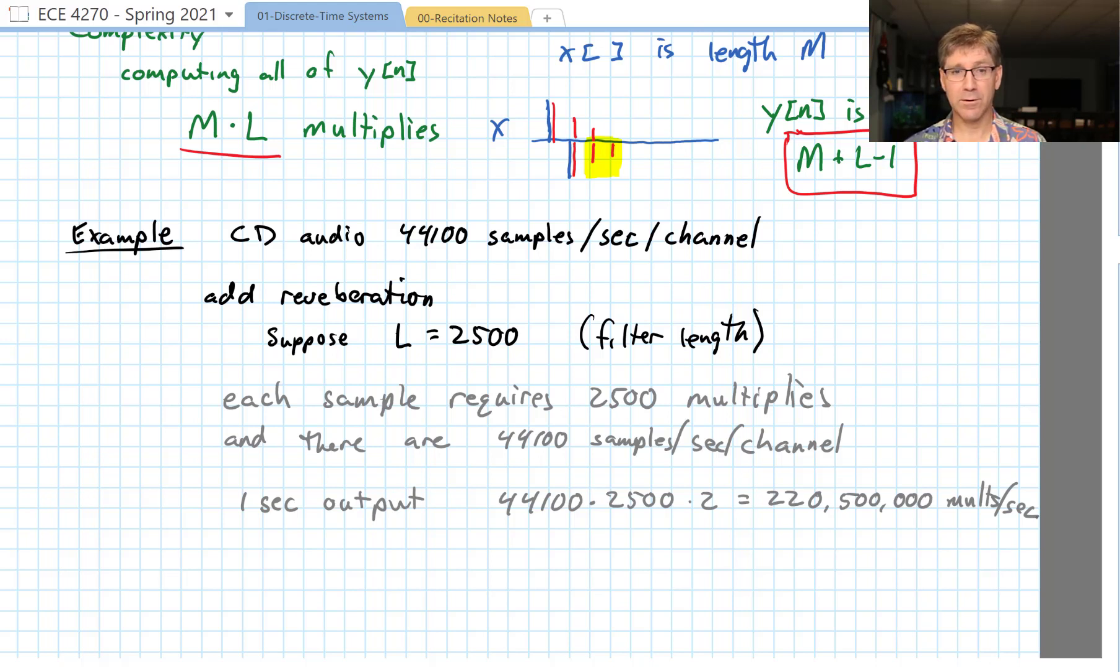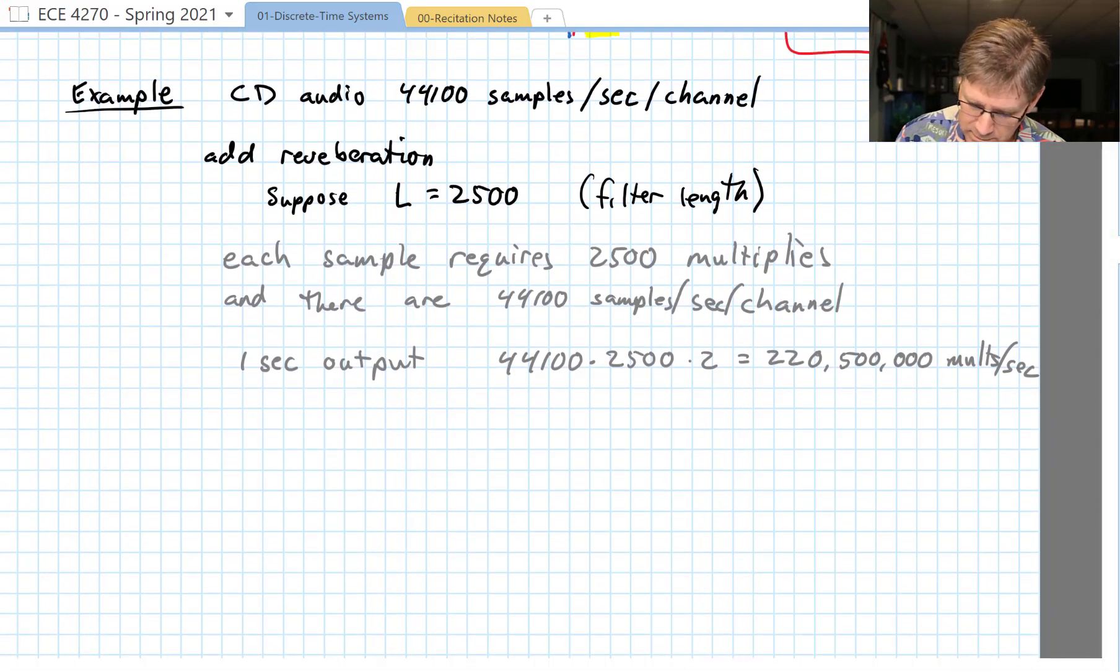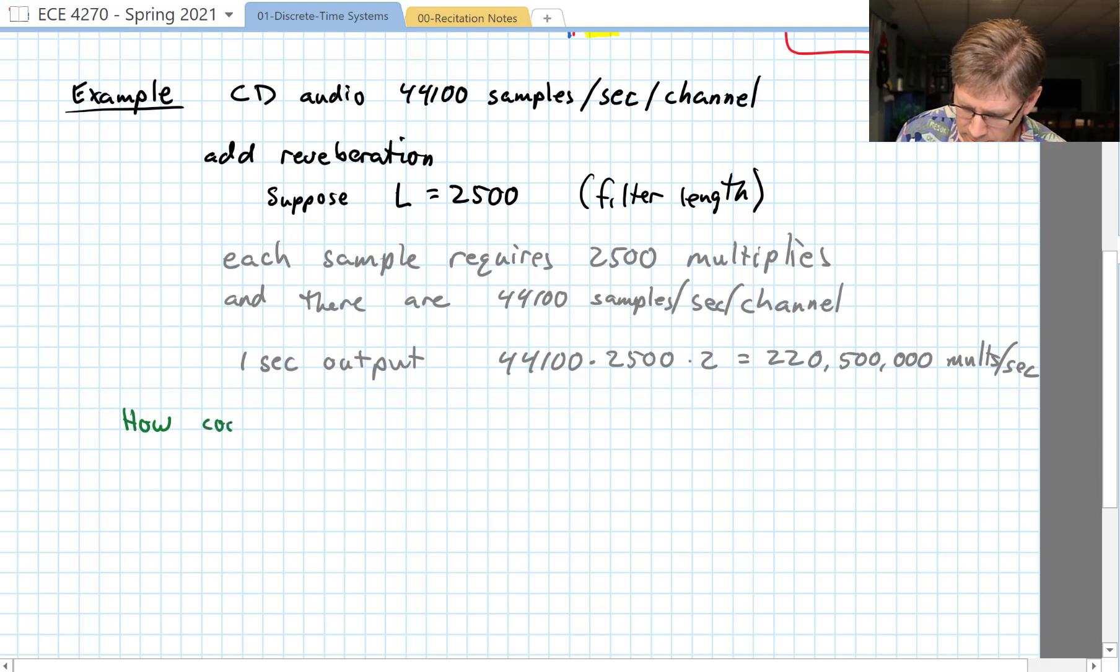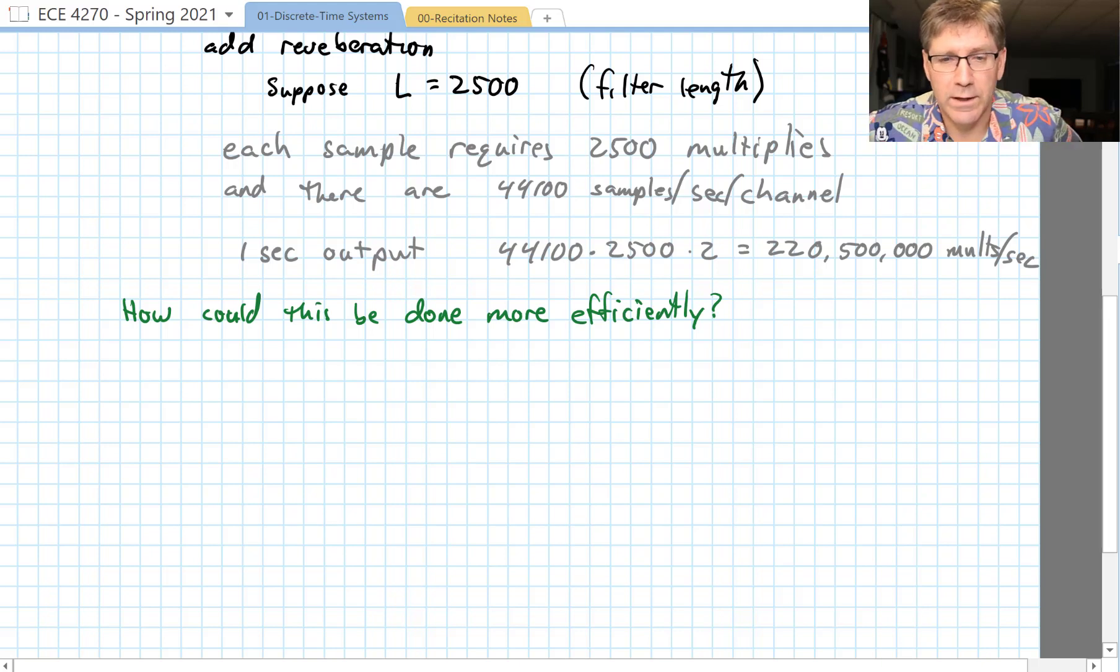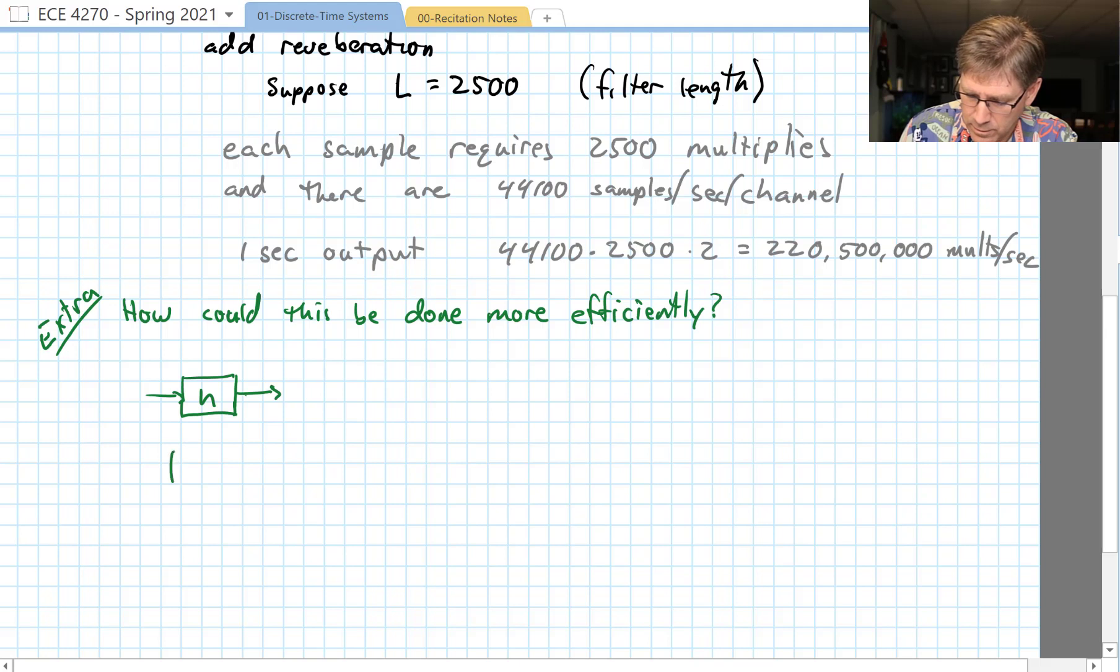So how did they do that? Well, actually let's go ahead and talk about that now. How could our ancestors have done this? There are several ways and we'll talk about this more later. This is kind of extra. Instead of having a single system H, we could implement several systems H1 and H2 and tack them together.